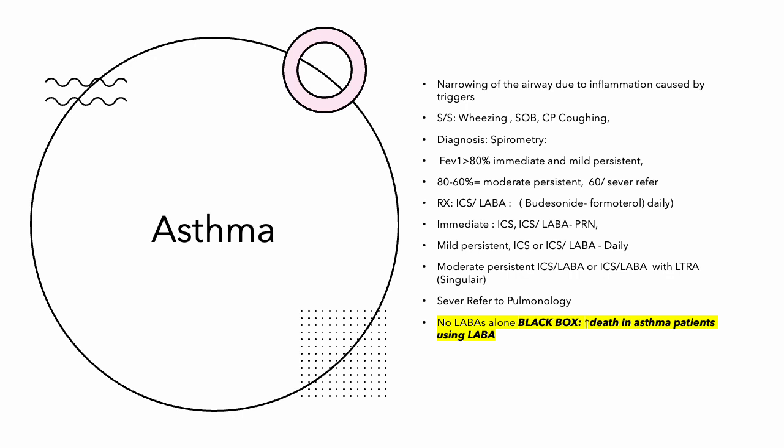For your intermittent patients, they're going to be getting the inhaled corticosteroid and LABA mix PRN. Mild persistent, they're going to be getting that mix daily. Moderate, they're going to be getting the inhaled corticosteroid LABA with a singular. For step four and above, I would say refer. The guidelines do give us medications that you can use, but once you're getting towards that higher acuity, you're not really playing in your scope anymore.